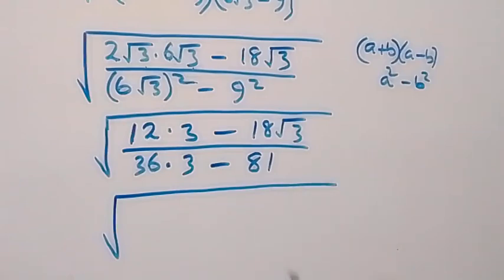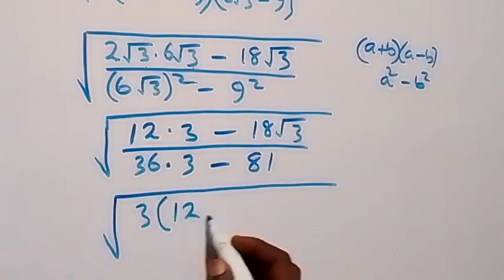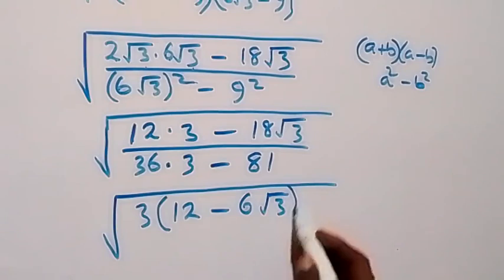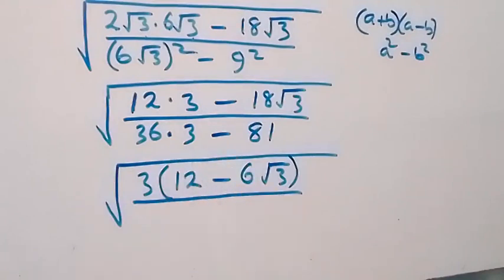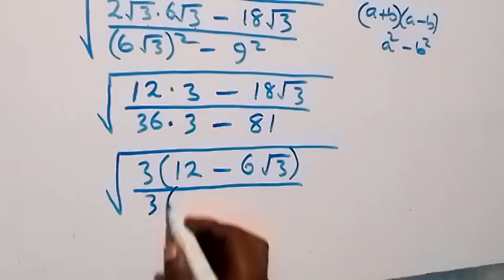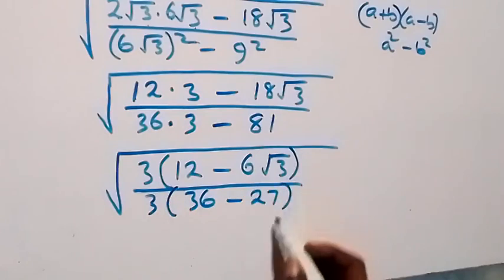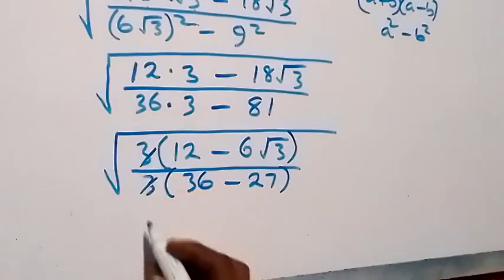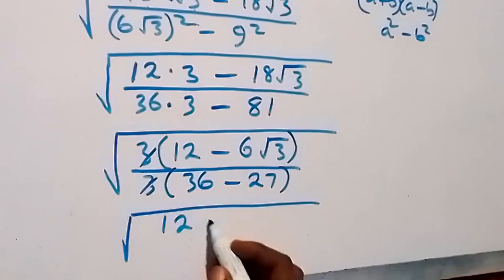We can factor what is common from here — that's 3 — leaving 12 minus 18 root 3. Factoring 3 out from the denominator gives us 3 times bracket 36 minus 27, close bracket. These 3s cancel each other, and now we are left with square root of 12 minus 6 root 3.